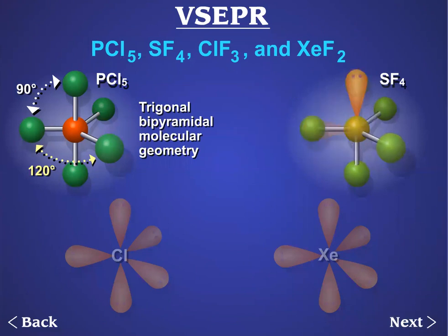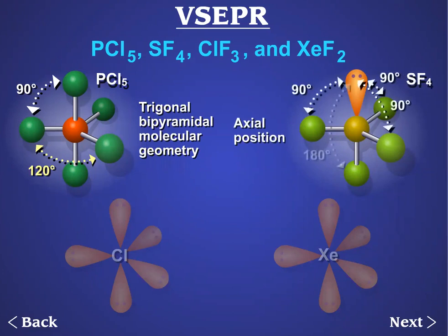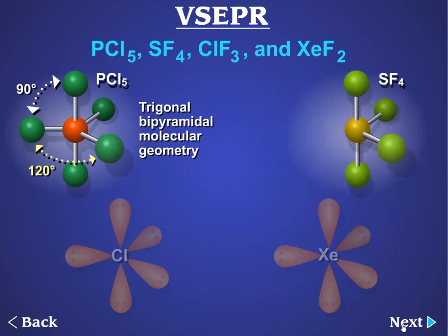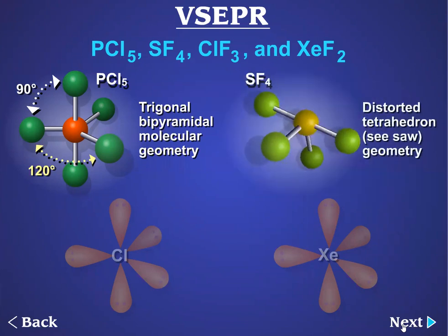On the other hand, if the lone pair were in an axial position, there would be three bonding pairs at 90 degrees and one pair at 180 degrees. The repulsions are smaller if the lone pair is in the equatorial position. The molecular geometry — that is, the arrangement of the sulfur and four fluorine atoms — is a distorted tetrahedron, or seesaw.